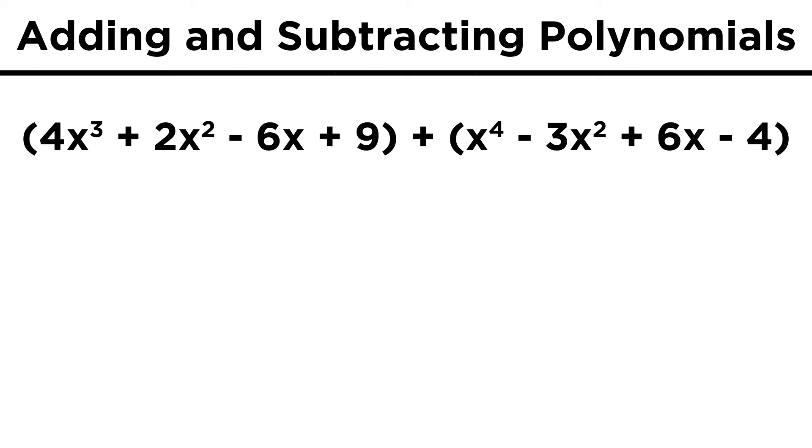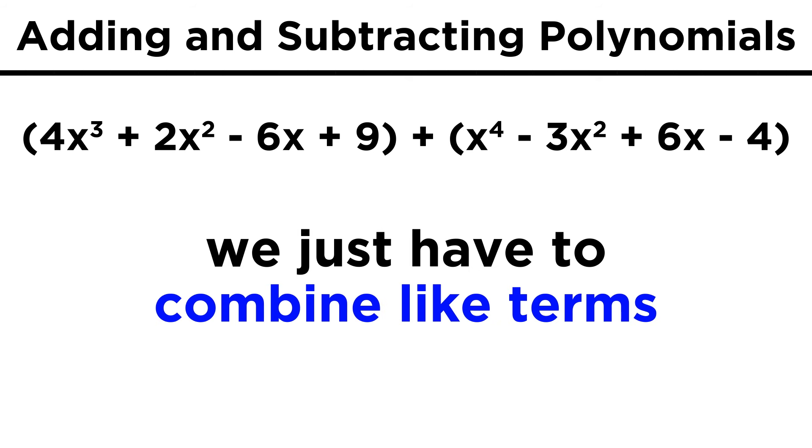When we add and subtract polynomials, the key is to combine like terms, because we want a single x to the fourth term, a single x cubed term, and so on, for any exponents that happen to be present in the expressions.